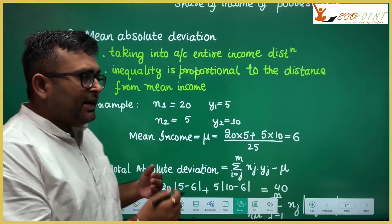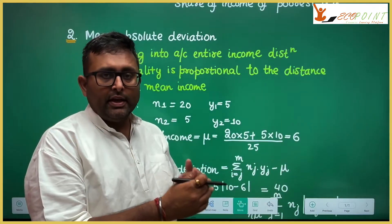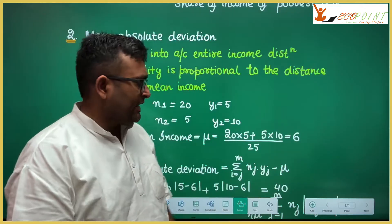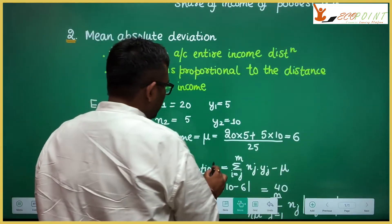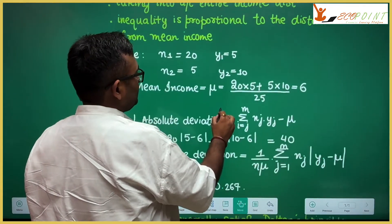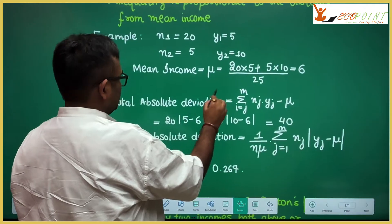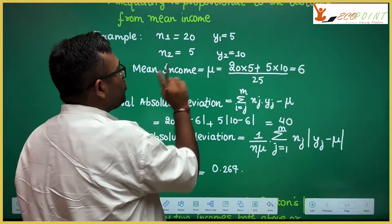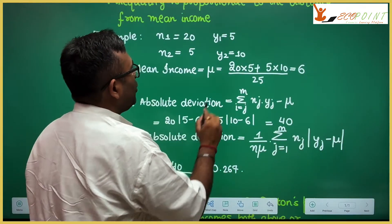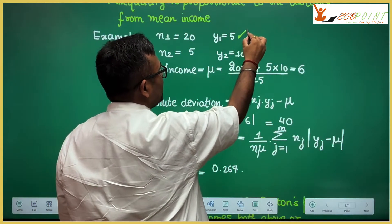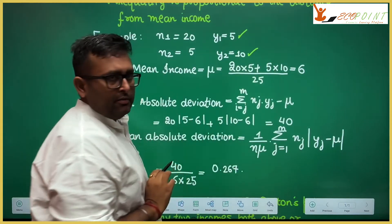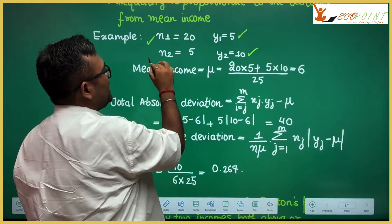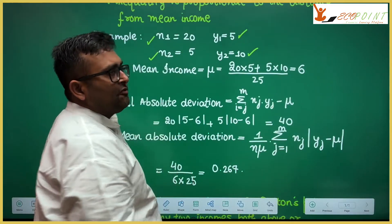If the distance of income from the mean income grows, it means inequality is going to grow. Here is an easy example. There are two classes: one class of people earning 5 and another earning 10. In the first class there are 20 people, and in the second class there are 5 people.